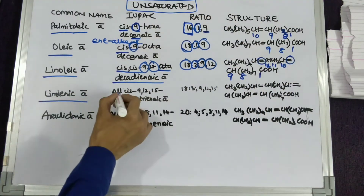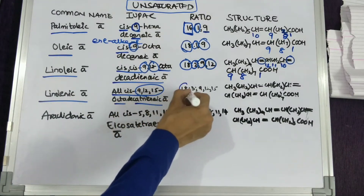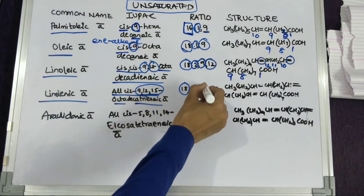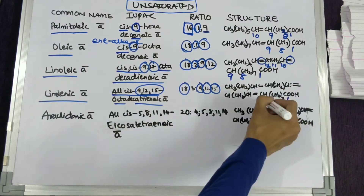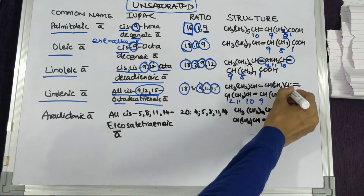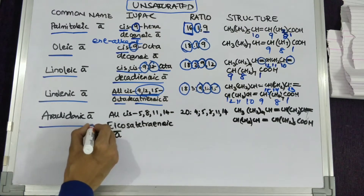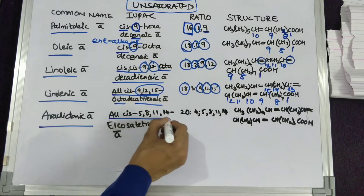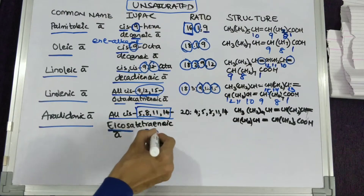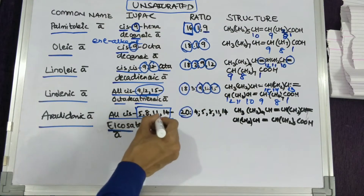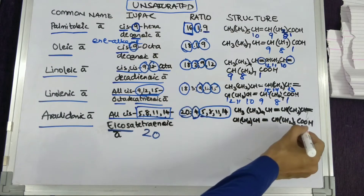The IUPAC name for linolenic acid is all-cis-9,12,15-octadecatrienoic acid — an 18-carbon structure with three double bonds placed on the ninth, twelfth, and fifteenth carbons. The IUPAC name for arachidonic acid is all-cis-5,8,11,14-eicosatetraenoic acid, where 'tetraenoic' represents the four double bonds. The 20-carbon structure consists of four double bonds on the fifth, eighth, eleventh, and fourteenth carbons.